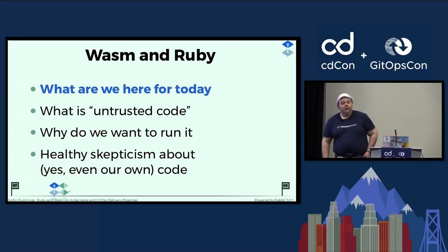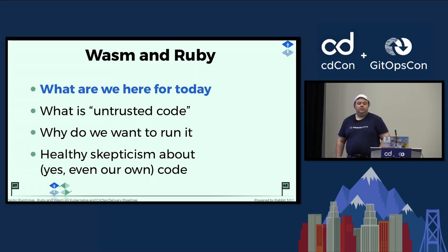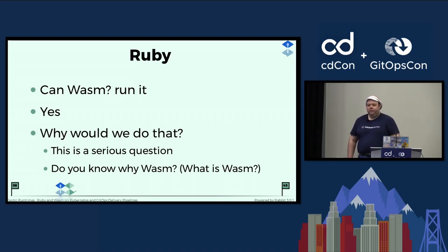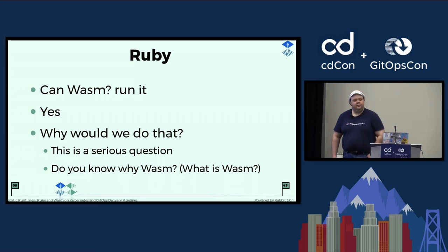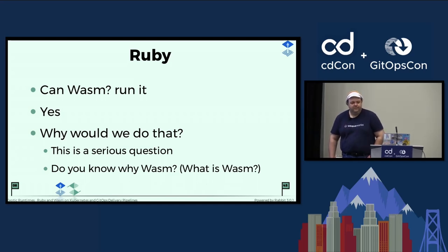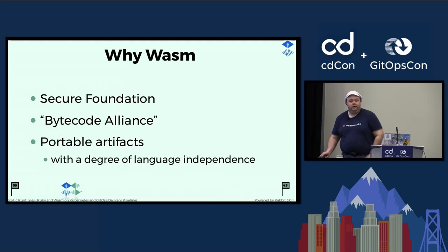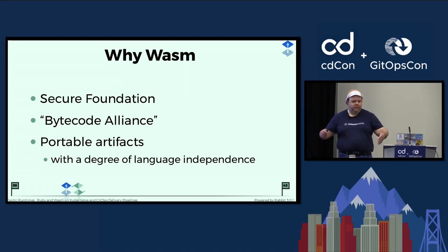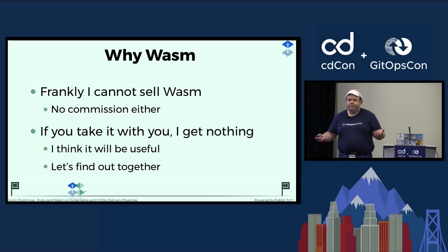So what are we here for today? What is untrusted code, and why do we want to run untrusted code? I do not trust my own code — that is part of the answer. Can Wasm run Ruby? That is the first question I'm going to ask, and yes, it can. But after I explored the topic thoroughly, I came to the conclusion I'm not sure there's a good reason to do that, at least for the purposes I intended. These are the reasons to use Wasm: it is a secure foundation that you can build on, you can build portable artifacts, and you can have a degree of language independence — though we'll see how that's limited, especially from a Ruby perspective.